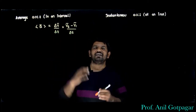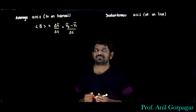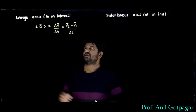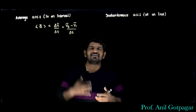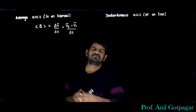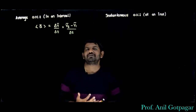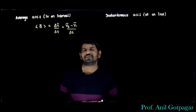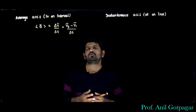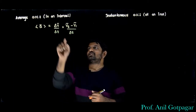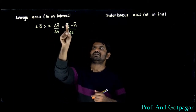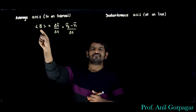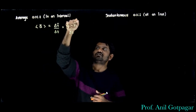Average acceleration is defined over a certain time interval, just as average velocity is change in displacement divided by time. Similarly, average acceleration is change in velocity divided by time. These are vector quantities, so use proper sign while substituting the values. It is v2 bar minus v1 bar divided by the time interval, and the direction of average acceleration is the same as that of change in velocity.